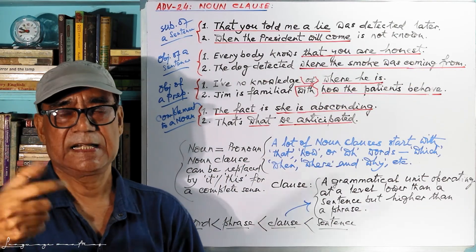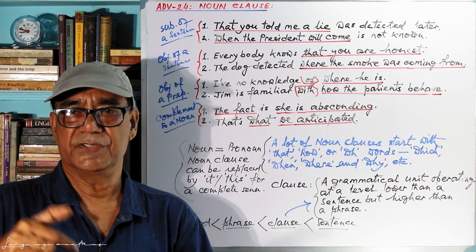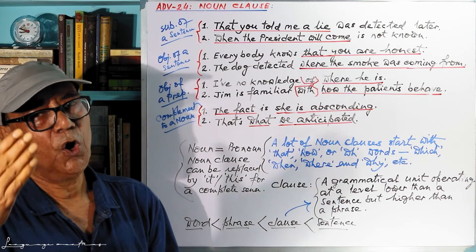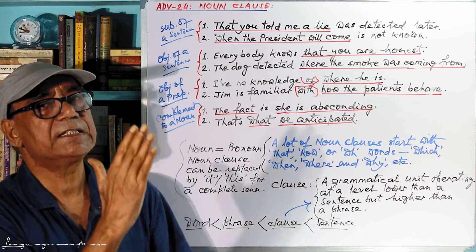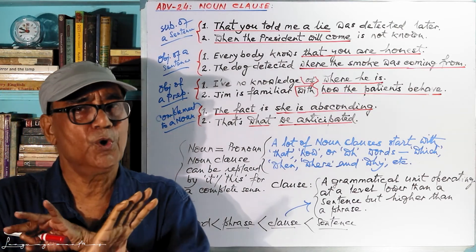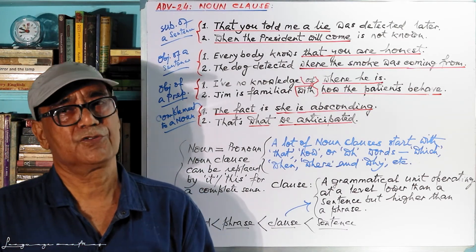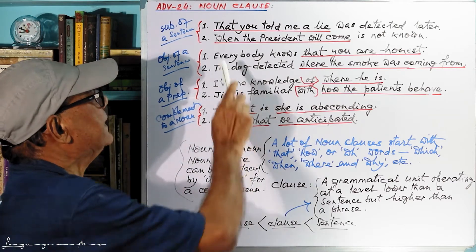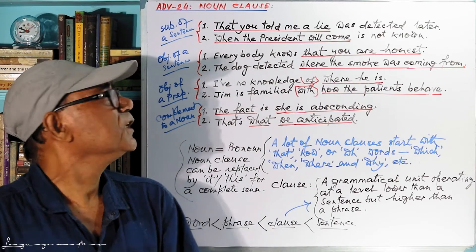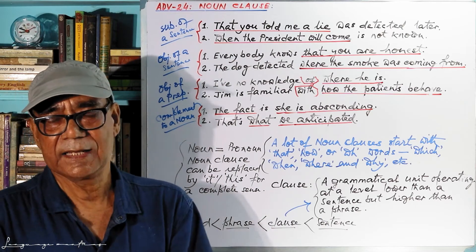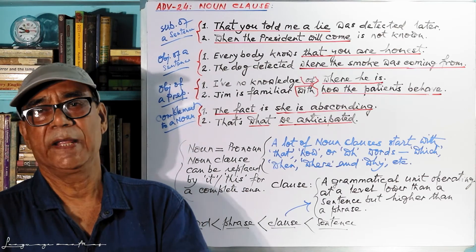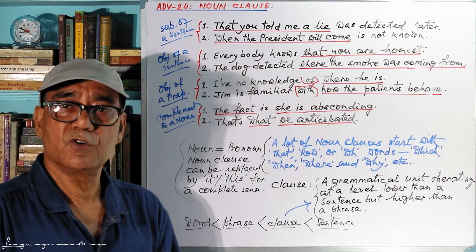The fact was detected later. Something was detected later. This was detected later. It was detected later. In all cases, you see the subject is either a noun or a pronoun. A noun is equivalent to a pronoun — so there is no doubt that this part serves the function of a noun. "That you told me a lie was detected later" — "that you told me a lie" is a noun clause.